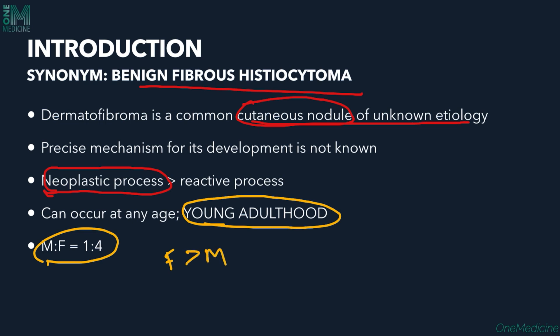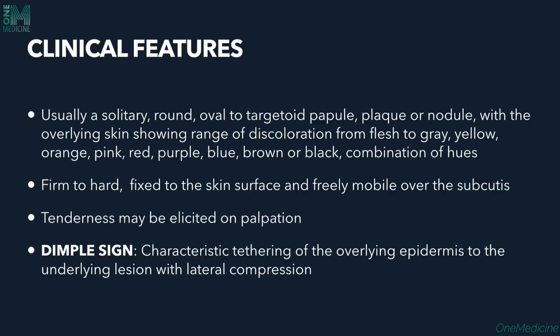It is a benign neoplastic process. Clinically we see a solitary, single, round to oval targetoid papule. The primary lesion may be a papule, plaque, or nodule with the overlying skin showing a range of discoloration — from flesh, gray, yellow, orange, pink, red, purple, blue, brown, black, or a combination of hues.